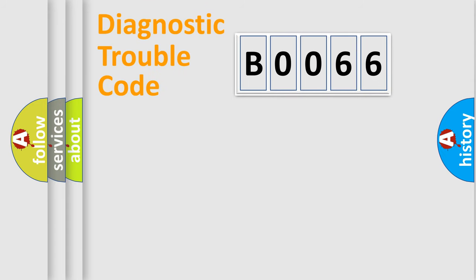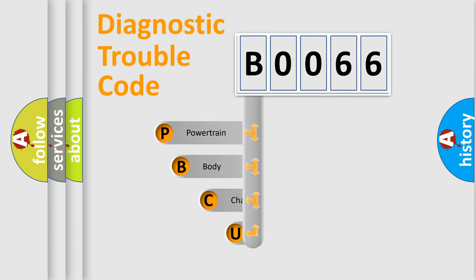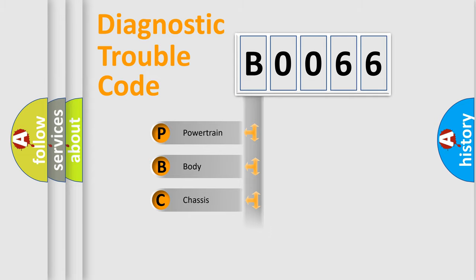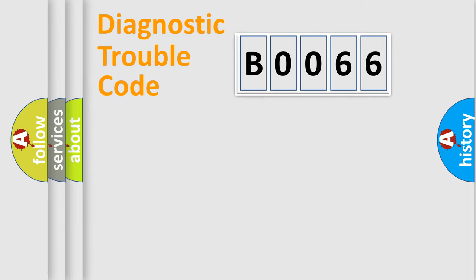First, let's look at the history of diagnostic fault code composition according to the OBD2 protocol, which is unified for all automakers since 2000. We divide the electric system of the automobile into four basic units: Powertrain, Body, Chassis, and Network.